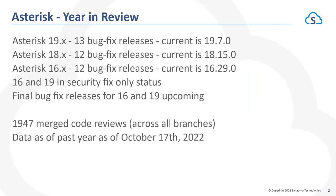Year in review — we're going to go over the Asterisk versions. Asterisk 19 over the past year has had 13 bug fix releases, the current version being 19.7.0. Asterisk 18 has had 12 bug fix releases, with the current version being 18.15.0. And Asterisk 16 has also had 12 bug fix releases, with the current being 16.29.0. Something to note is that 16 and 19 are now in security fix only status, meaning they do not receive any bug fixes. There will be some final bug fix releases for 16 and 19 coming out soon, after which they'll transition to only receiving security fixes.